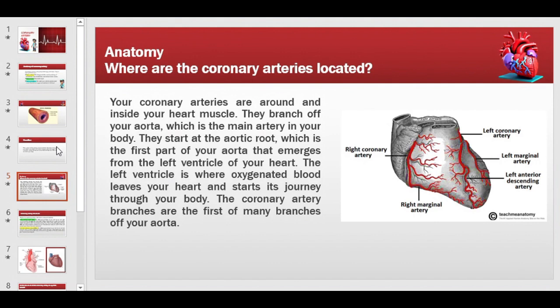In this way, the coronary arteries originate and spread around the heart. Your coronary arteries are around and inside your heart muscle, branching off the aorta — the main artery in your body. They start at the aortic root, the first part of the aorta that emerges from the left ventricle, where oxygenated blood leaves the heart. The left coronary artery supplies the left side and the right coronary artery supplies the right side.